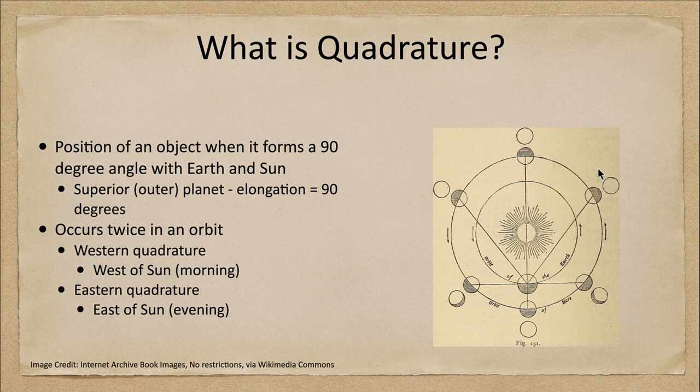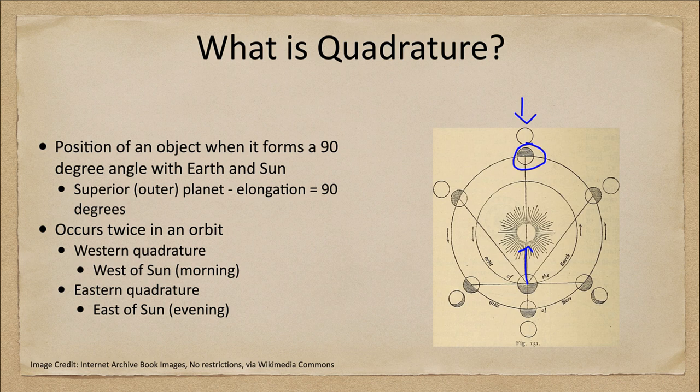Now we have various different positionings that can occur. Mars can be in the same direction as the sun in the sky. So from this position, as seen in this direction, this position, Mars would be at conjunction. It would be in the same direction as the sun in the sky.